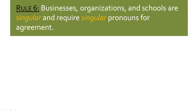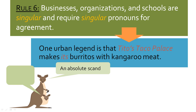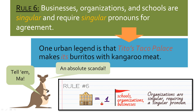Rule number six: businesses, organizations, and schools are always singular and they require singular pronouns for agreement. Our companies, organizations, schools, and businesses are going to require a singular pronoun to agree.